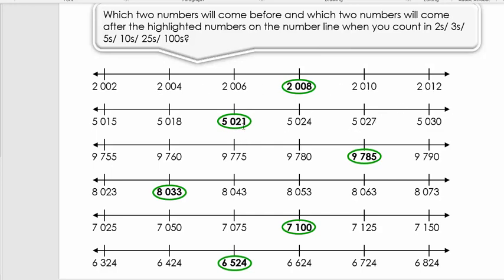Let's look at the next number. 5,021. Which number comes before that? Which number comes after that? So let's quickly see. We have 21 here. We've got 18, the last two digits, and 24. So in what intervals are we counting? We're counting then in threes. So if we look at the last two digits, it's 15, 18, 21, 24, 27, 30.